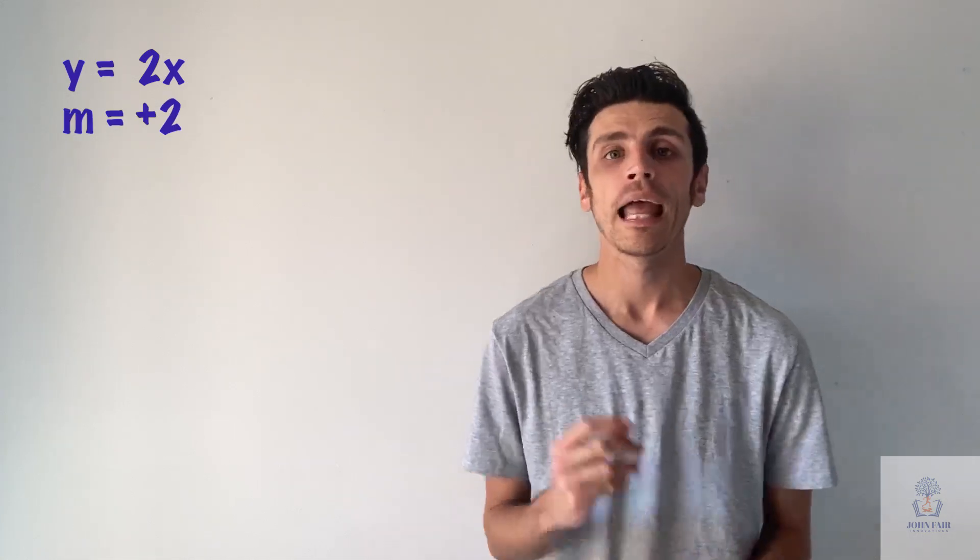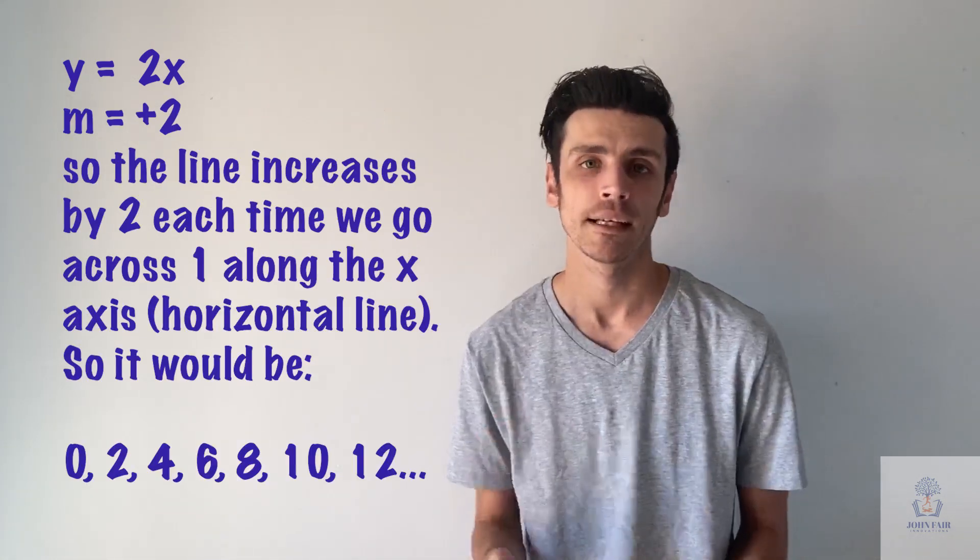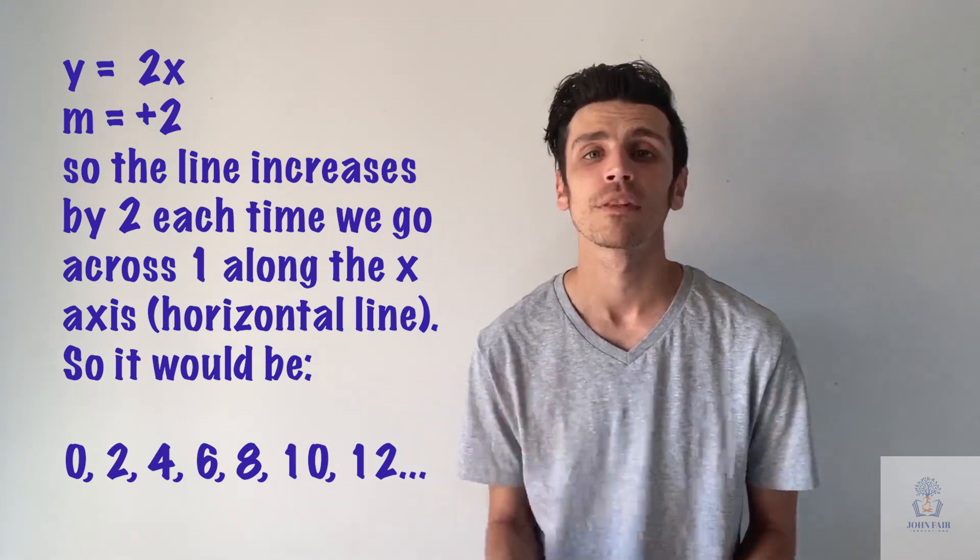Now m actually represents the rate of change. And what we mean by that is the rate in which the line is constantly changing. So say if we go back to our y equals 2x, for example, m is 2, because that's the number in front of x. So what it's saying is that our values are constantly going up by the number 2.